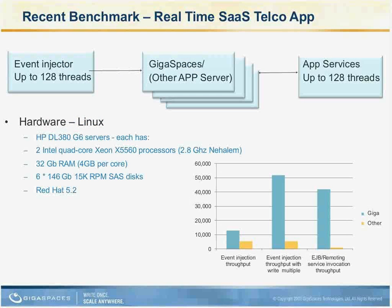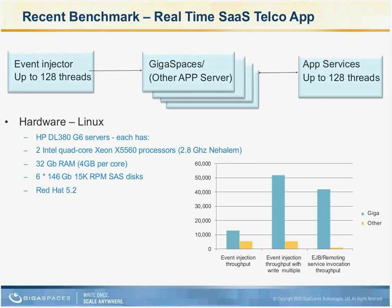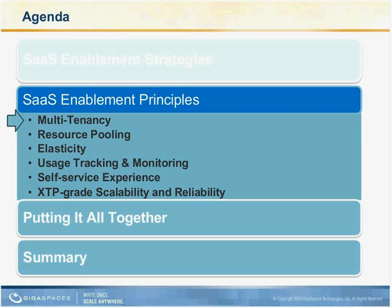You can see some of the performance benefits and their ability to provide more density — more users for the same machines — reducing margins per customer. This was a real slide from a leading telco provider, with their benchmark figures comparing the in-memory solution versus a standard application server. I think this gives an introduction that SaaS-enablement of an existing application is something that can be done — you don't necessarily need to rewrite your entire application.